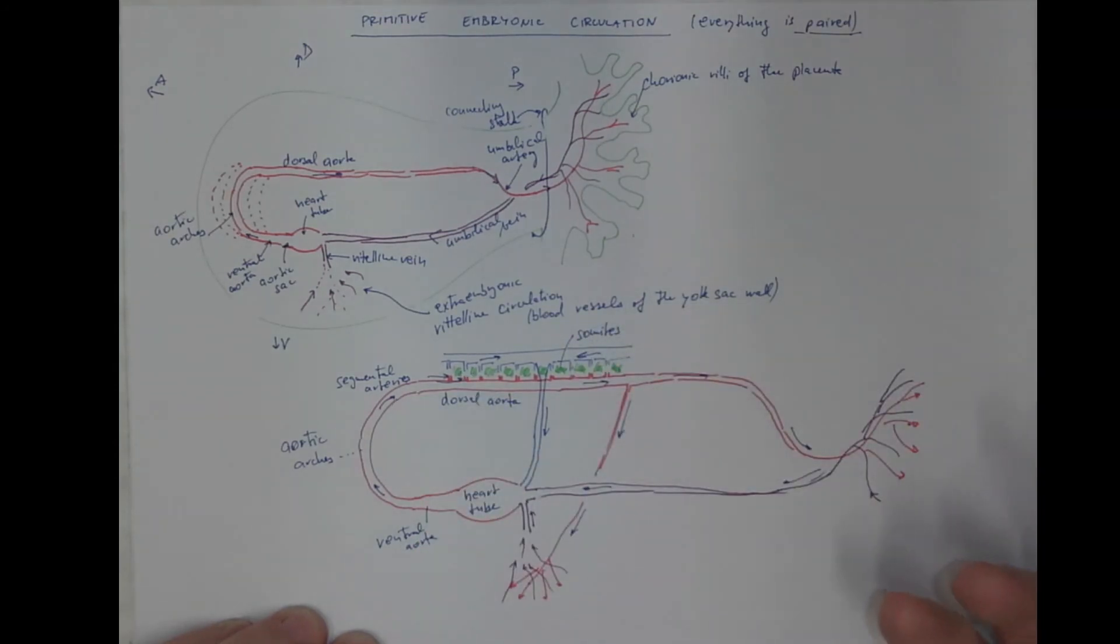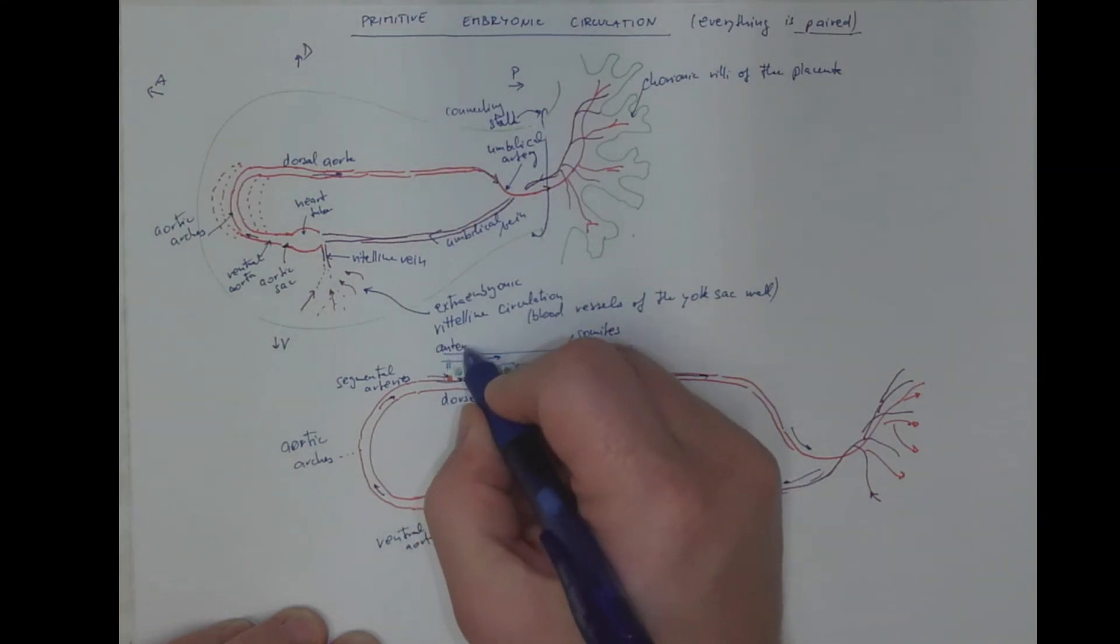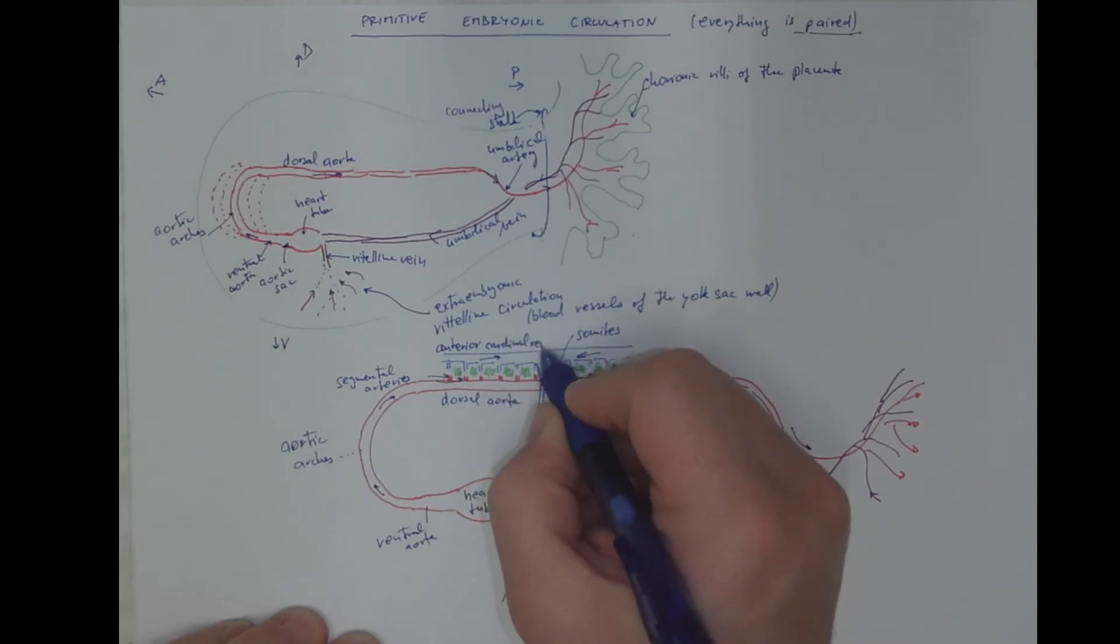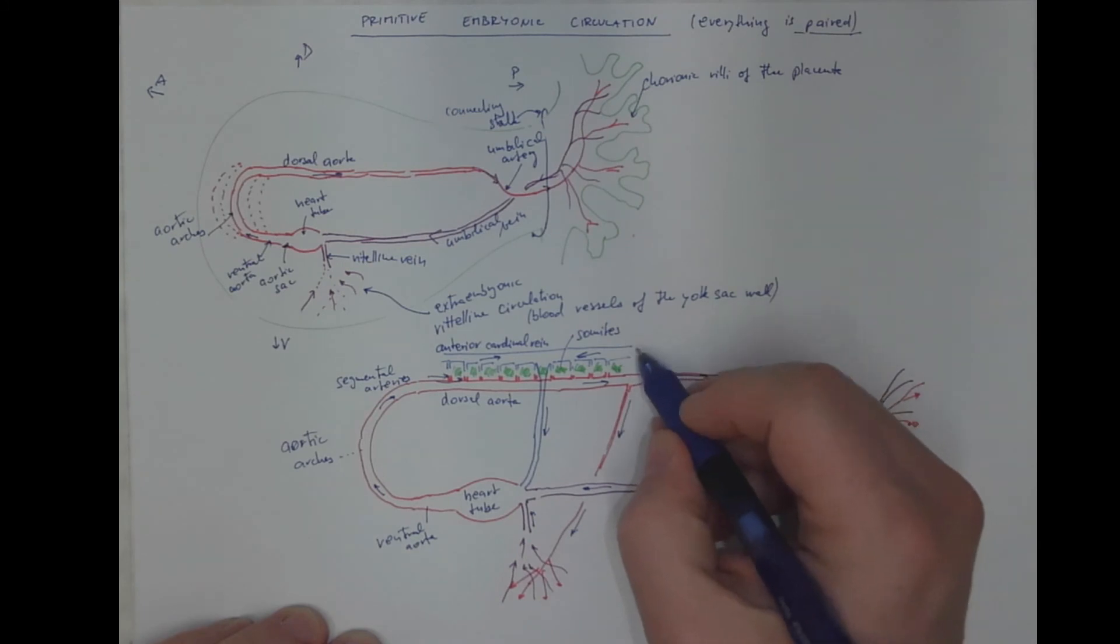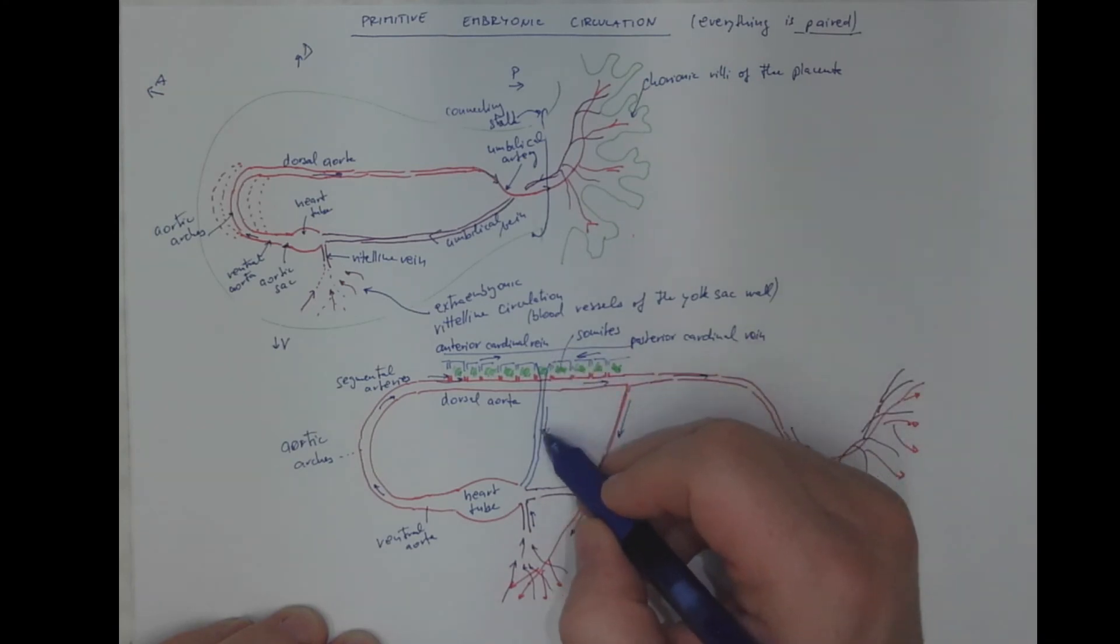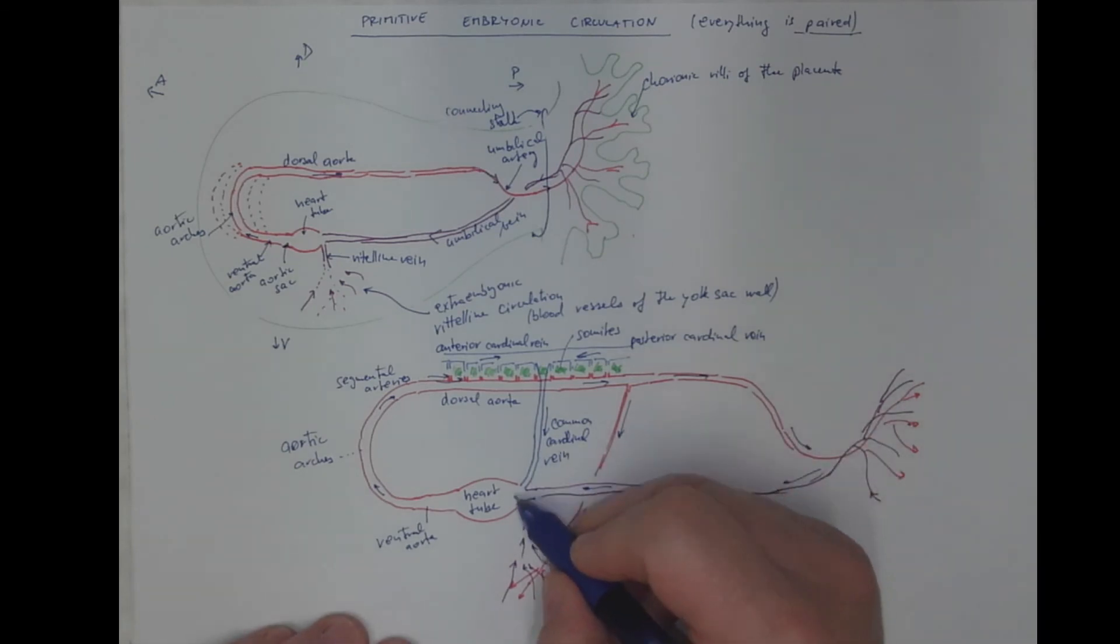So to the important region of the body of the embryo. The blood is collected via cardinal veins, namely the anterior cardinal vein. Cardinal means something really important. That's what these veins really are. And the posterior cardinal vein. Both of which are fusing to form the common cardinal vein that enters the heart.